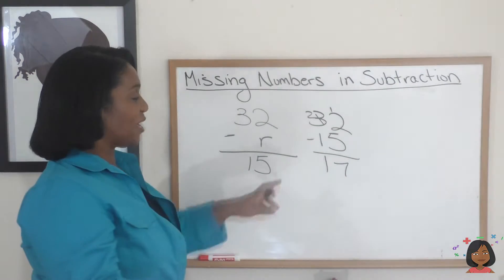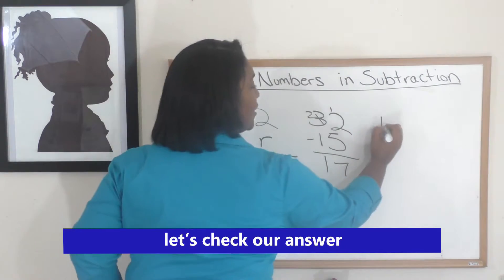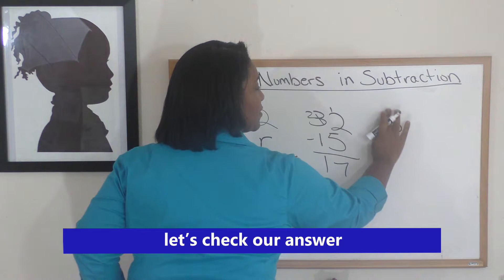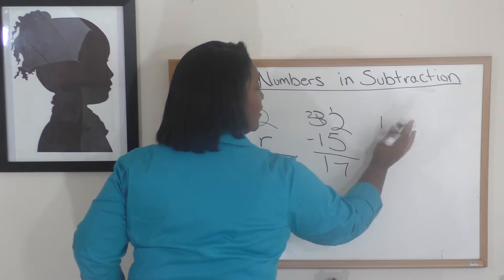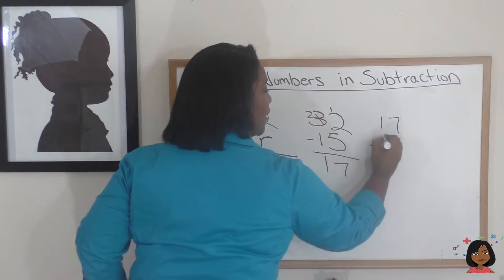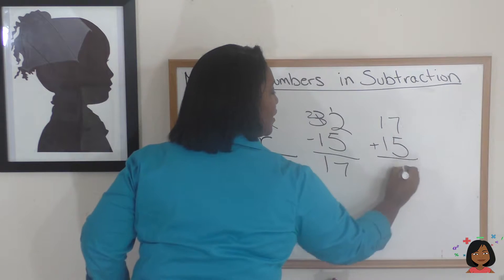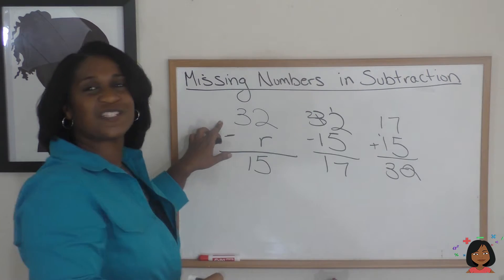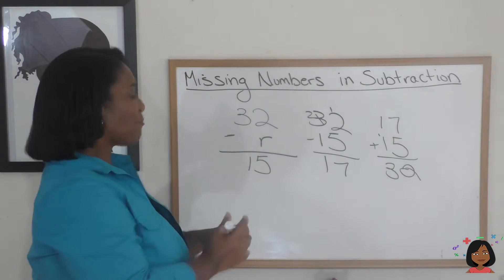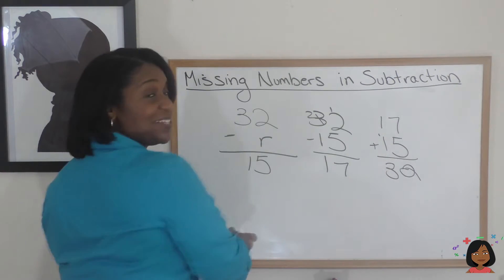But I'm not going to stop there. Let's use our built-in answer checker. Let's do 17 plus 15, and that gives us 32, which is what we started out with. So that means, correctly, that 17 is our answer.